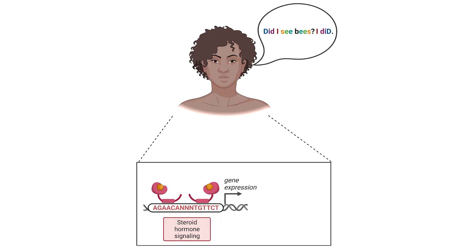Mammalian steroid hormone signaling uses palindromic cis-regulatory motifs to control a variety of essential processes such as immune responses, inflammation, metabolism, and the development of sexual characteristics. The specific cis-regulatory sequence determines whether a steroid receptor binds as a monomer or a dimer.